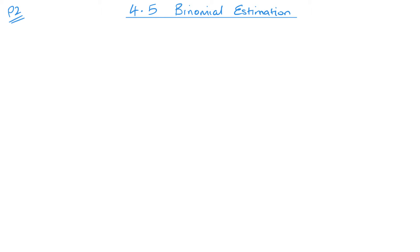Welcome back to P2. Today we're looking at binomial estimation, unit 4.5. This comes up pretty much every single exam — it's usually just one part of a binomial question, like a part B or part C, where you have to use your expansion to estimate the value of a specific number.